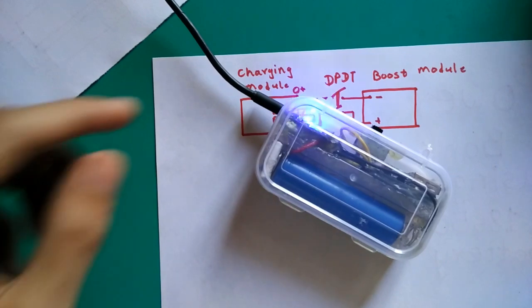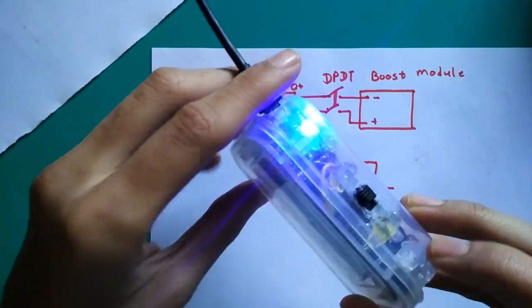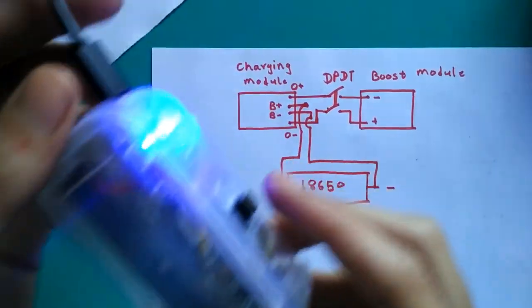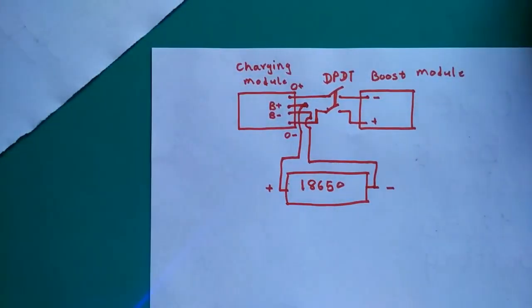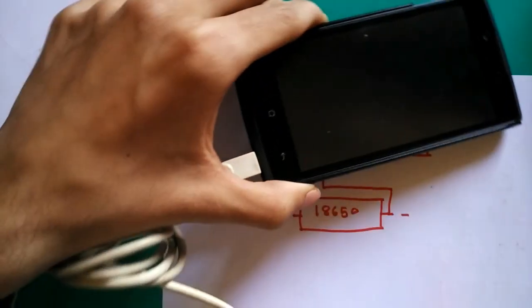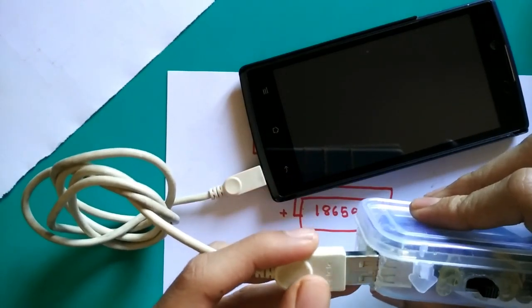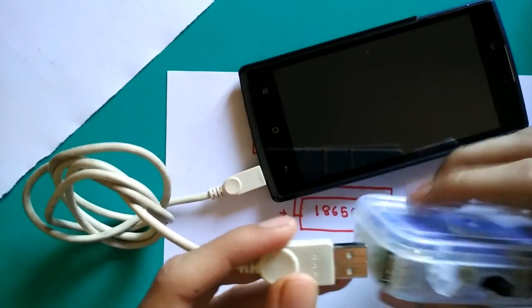So now the power bank is fully charged - you can see the dual LED glowing. So now I am going to charge my mobile and I am connecting it to my newly made power bank.